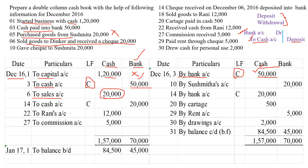When the check is deposited — look at this transaction: on 14th, the check received on December 6th is deposited into bank. When the check is deposited, it will be treated as a contra entry, just like the previous example. Bank account debit to cash account. On 14th, we have written 'by bank account' in the credit side and 'to cash account' in the debit side. When a check is deposited, for the banker cash comes in, and for the business the cash goes out — so cash account is credited and bank account is debited. We are writing C for contra in the LF column on both sides.